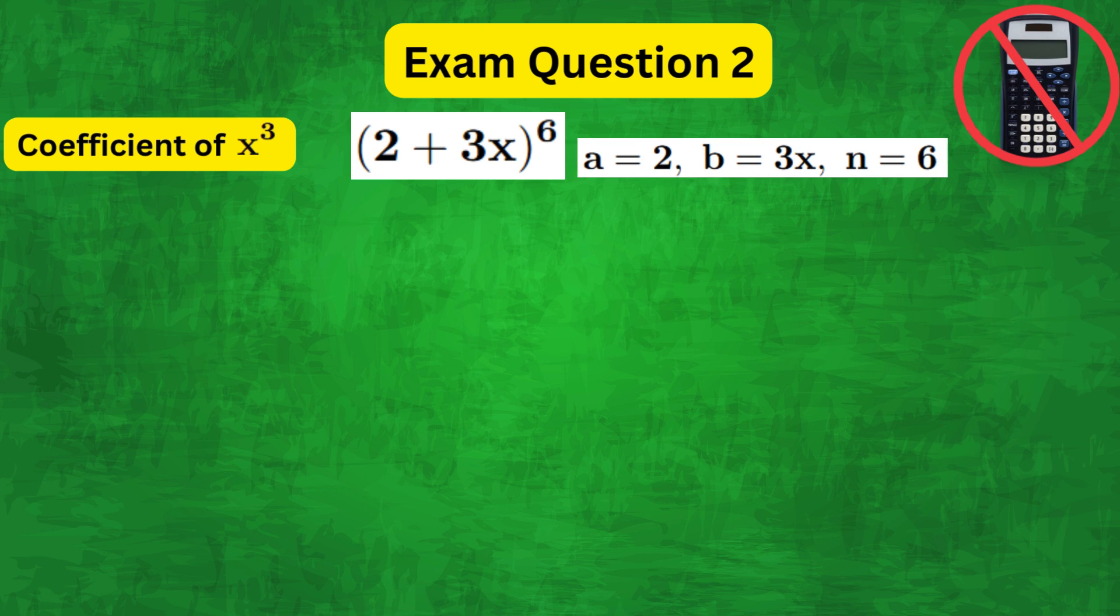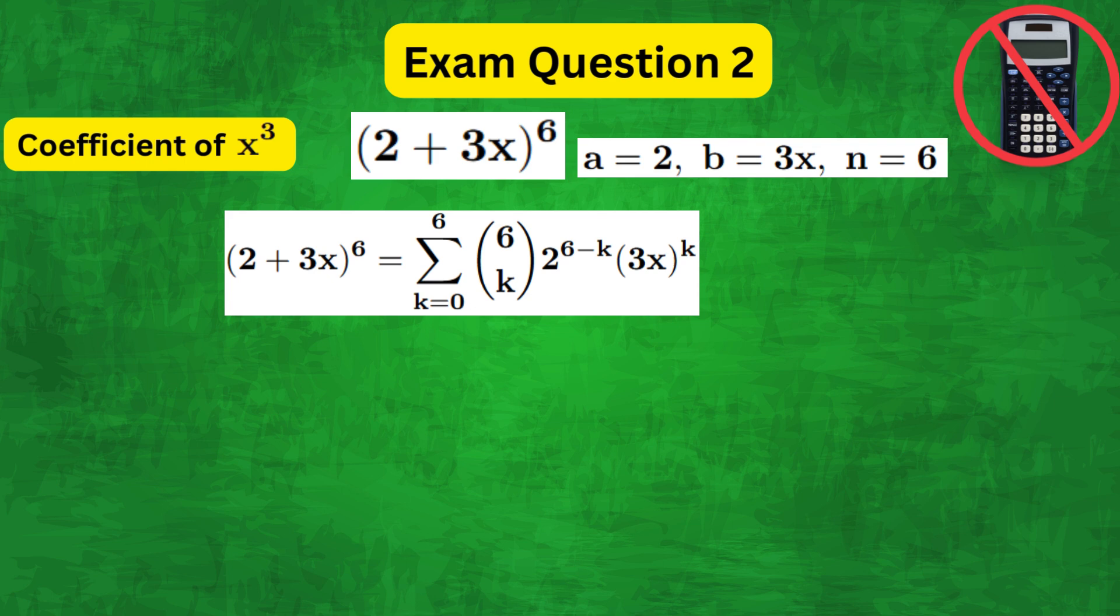Now if we look at the binomial expression we find that x cubed term would be obtained by setting k equals 3.